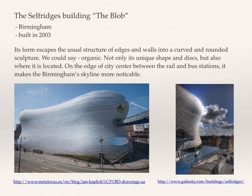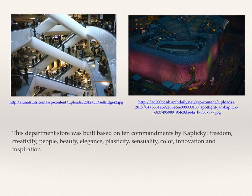The Selfridges building, also known as 'the blob,' is in Birmingham, built in 2003. Its form escapes the usual structure of edges and walls into a curved and rounded sculpture — we can say organic. Not only its unique shape and discs, but also its location make it distinctive. This department store was built based on Kaplický's Ten Commandments.